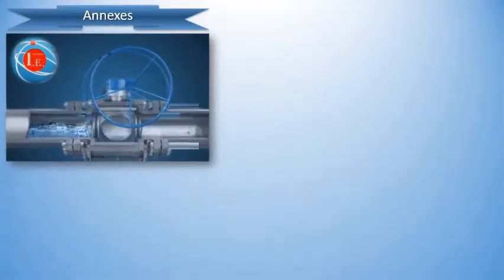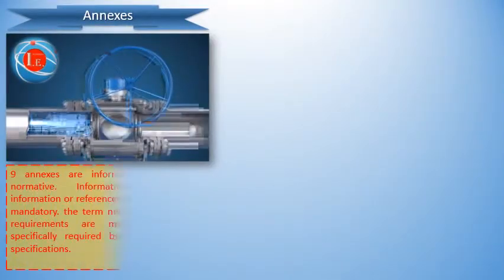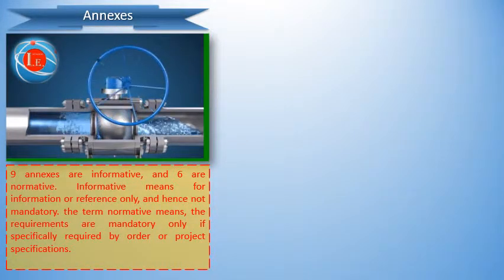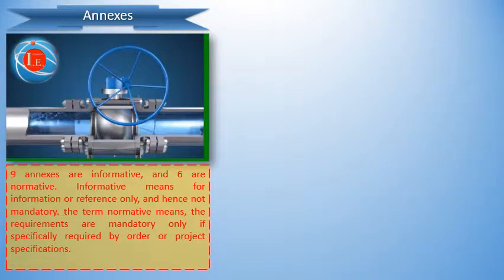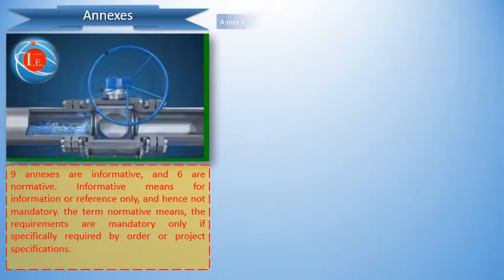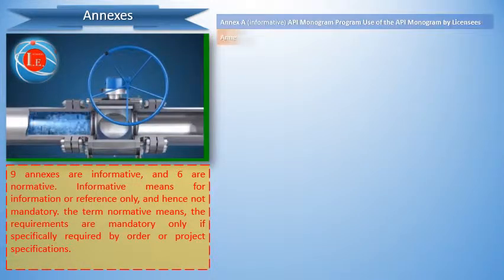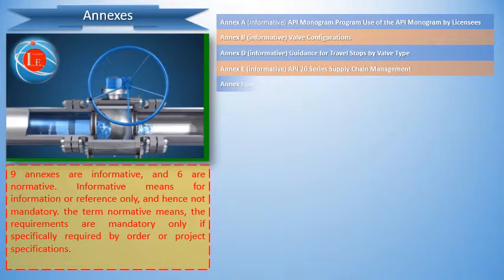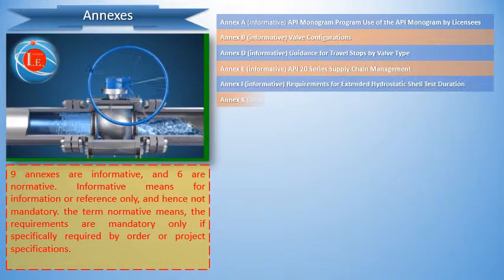Section 14 defines the facility minimum requirements for performing valve assembly activities. In addition to the 14 main sections, API Specification 6D contains an additional 15 annexes. Nine of these annexes are informative, and the remaining six are normative.